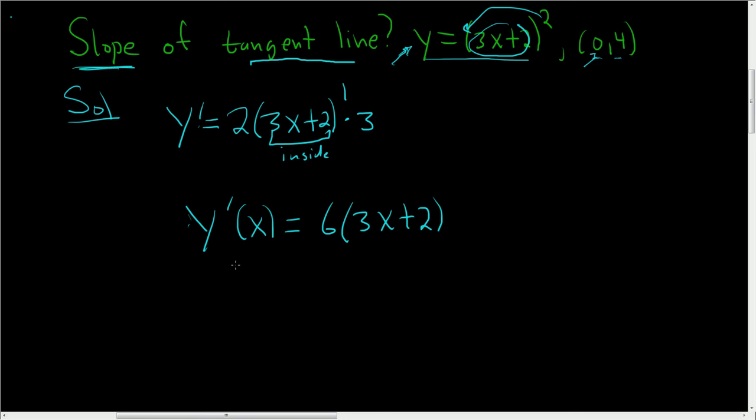So to finish, we plug in 0. The slope of the tangent line at 0 is the derivative of y at 0. This is the slope at x equals 0. So we end up with 6 times (3 times 0 plus 2).